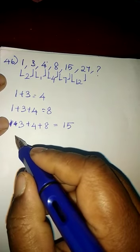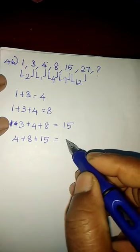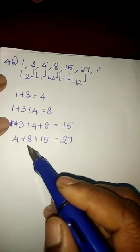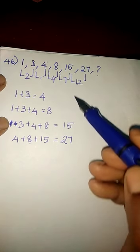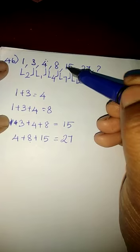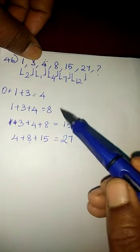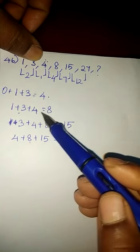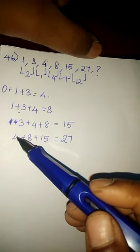And then 4 plus 8 plus 15 gives 27. 4 plus 8 gives 12, 12 plus 15 gives 27. The 4 is the sum of these two numbers and the 8 is the sum of the first three numbers. So the first three numbers lead to the sum of the next number. 1 plus 3 plus 4 gives 8, 3 plus 4 plus 8 gives 15. Then 4 plus 8 plus 15 gives 27.